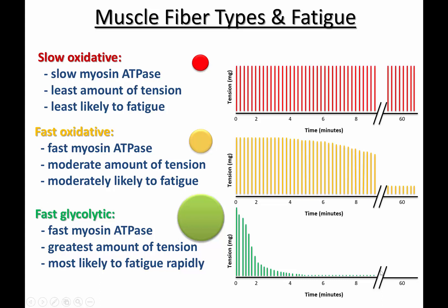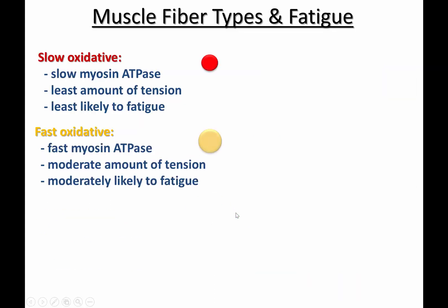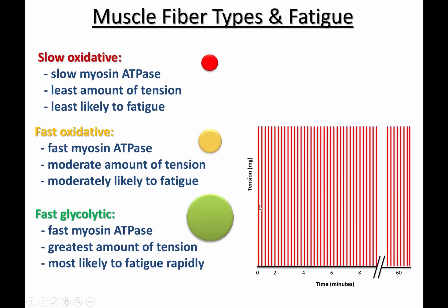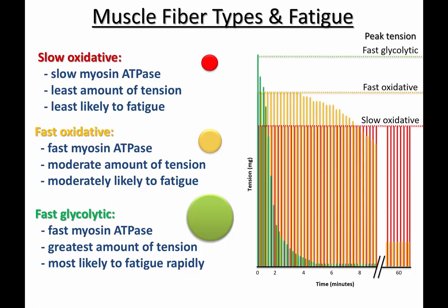The fast glycolytic fiber needs a significant rest period to return to its maximum force levels. This next slide shows the same information in overlay — the response of slow oxidative fibers, fast oxidative fibers, and fast glycolytic fibers — showing how the relative amounts of tension and the time at which fatigue starts differ based on muscle type.